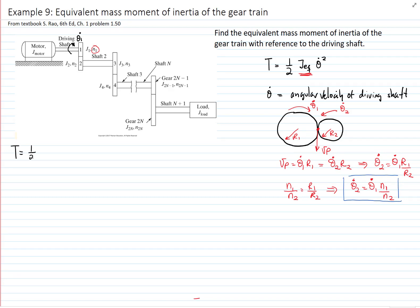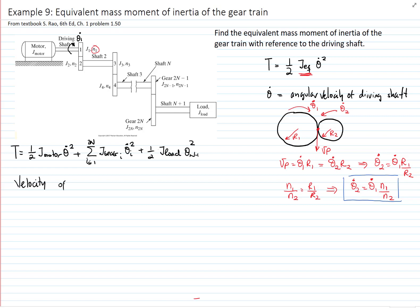We will calculate the kinetic energy of all the components — adding the kinetic energy of the engine or motor, and then adding the kinetic energy of each of the gears. The mass moment of inertia is given for each of the gears. We are assuming that the shaft represents the elastic portion of the problem, so all the mass is concentrated in the gears and the shafts are the springs.